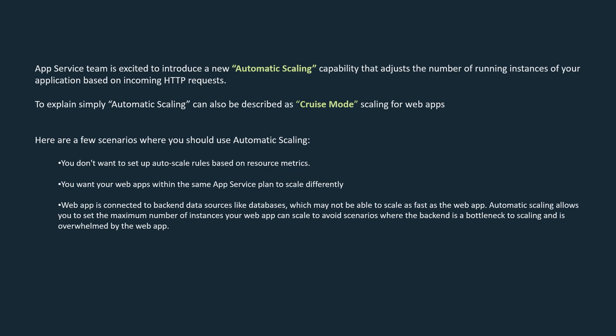This is a feature we have just recently previewed. It's yet another option for you to set up scale conditions for your web apps — you can scale out and scale in your web app based on incoming HTTP traffic. Some of the scenarios where you may want to use this feature are if you don't want to use auto scale where you could set conditions and schedules based on metrics, or if you have multiple web apps in an app service plan.